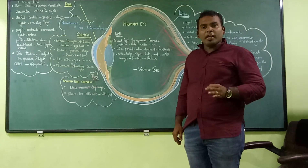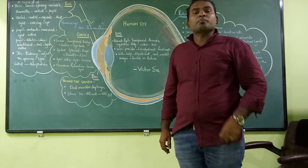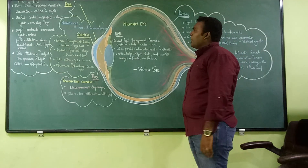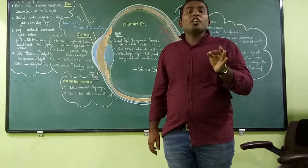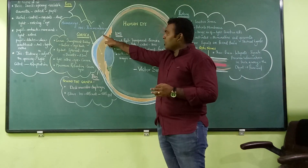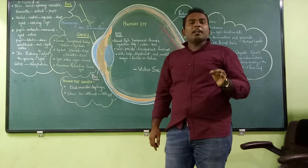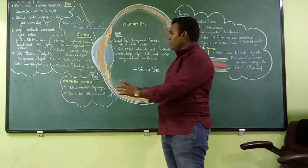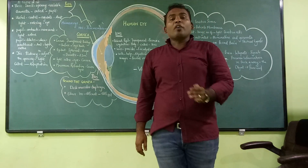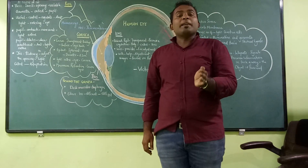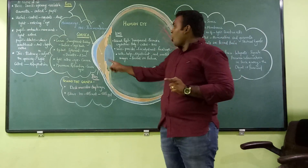I have drawn a diagram here on the green board so that you can get a deeper perspective. The human eye has a thin membrane which is called the cornea. The cornea forms a transparent bulge on the surface of the eyeball. The light which enters the eye enters through the cornea first.